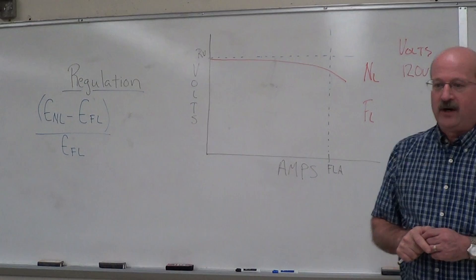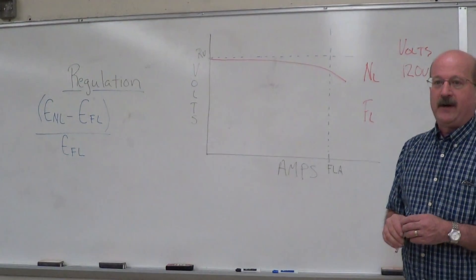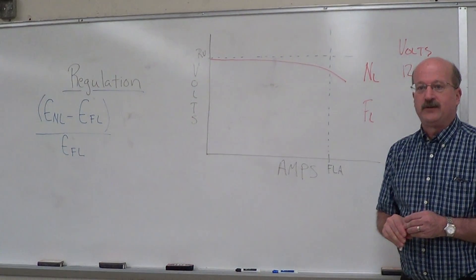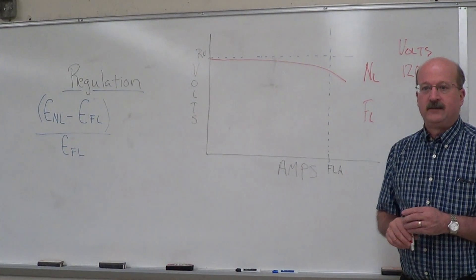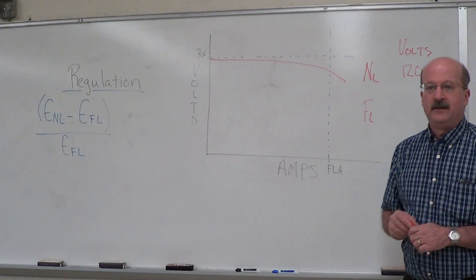And your rated current on this generator is one amp. So what did you have at one amp output current, your voltage? It was somewhere around, I think, 107 volts. You had 107. What did you have, Matt? 101. You had 101.